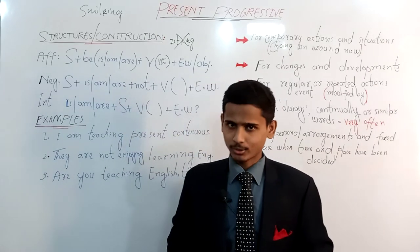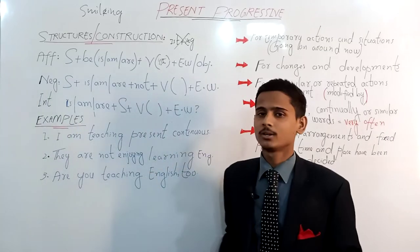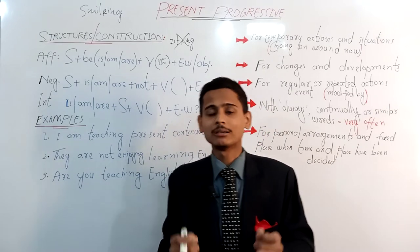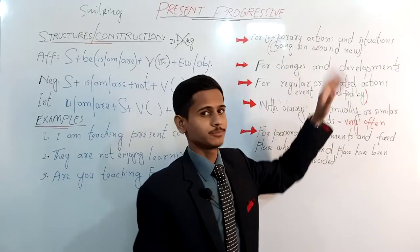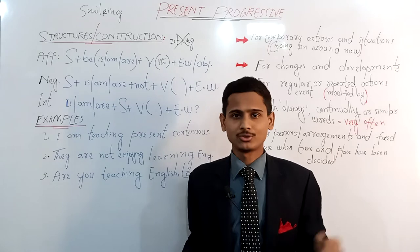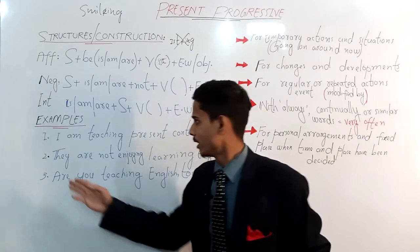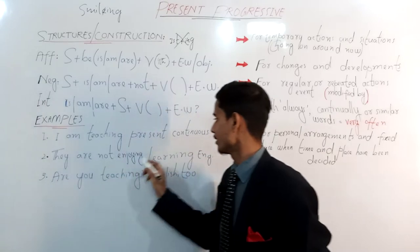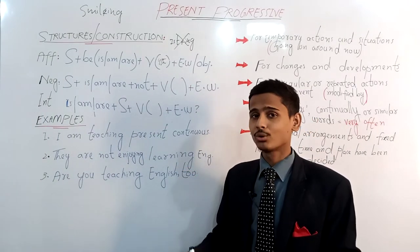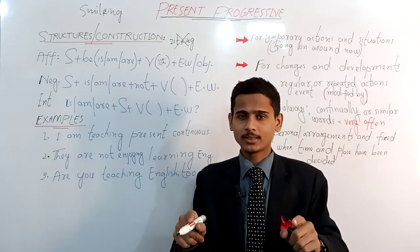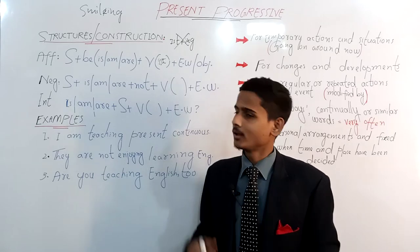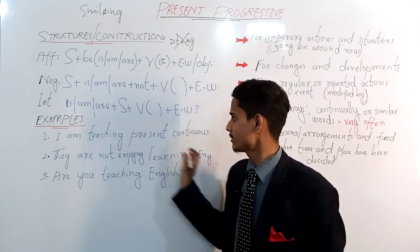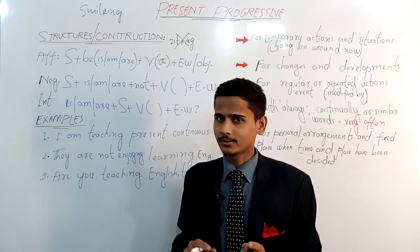Let's look at some example sentences. The first one: 'I am teaching' — present continuous or present progressive. This is an action happening or going on at the time of speaking, so our first definition is really approved here. Next, a negative example: 'They are not enjoying learning English.' Here I am showing negation in the present moment — something is not happening or not going on.